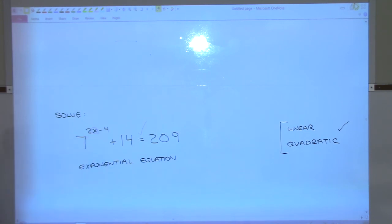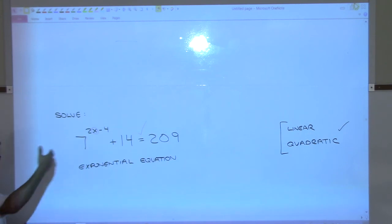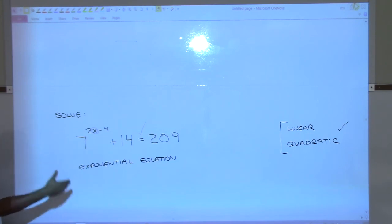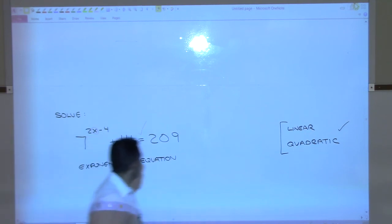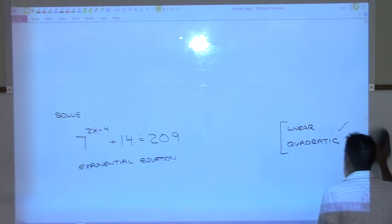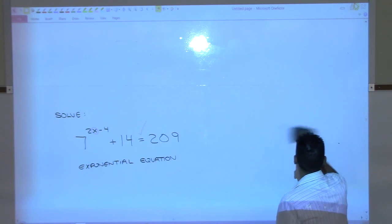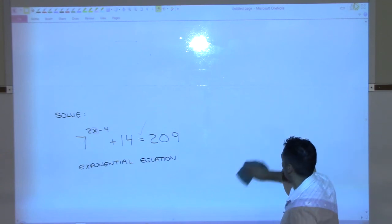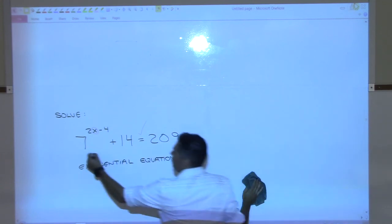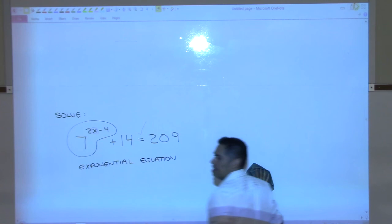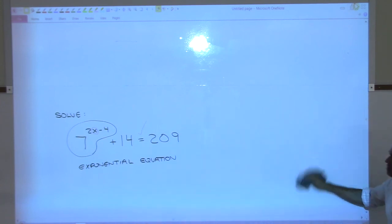How do we solve these? We're going to do exactly what we did last class — we're going to somehow bring the logarithm into the problem, because the log has that property that allows you to pull things out front. So the first step is to try and isolate this term — get it by itself.